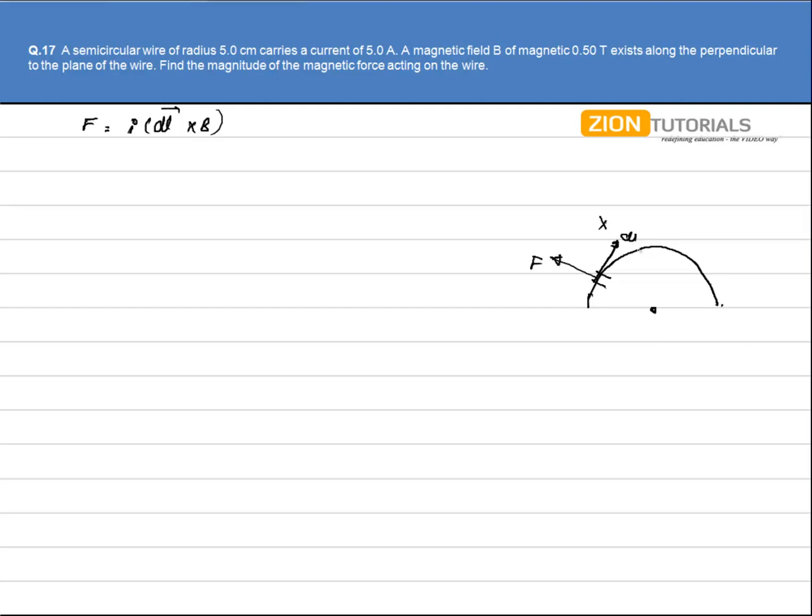And similarly if I take the elementary vector throughout its circumference then the force will be always perpendicular. But what I have to calculate over here is the net force, and net force will be the vector addition of all these forces.